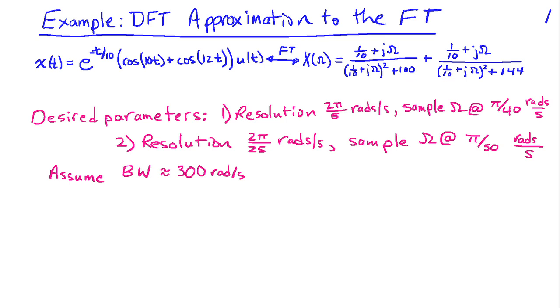Here's the scenarios we're going to consider as far as our desired parameters. In one case, the resolution of our DFT approximation will be 2π/5 radians per second. We want to be able to see details at that level, and if you look at the original signal, the two frequencies are spaced by 2 radians per second, so 2π/5 is just a little bit more than 1 radian per second, so we should be able to resolve the peaks associated with these two sinusoids at this level of resolution, and we're going to sample omega in frequency at π/40 radians per second. The second case has higher resolution by a factor of 5. We're going to decrease the resolution to 2π/25, so the main lobe width of our window function will be well below the separation of these two sinusoids. We should be able to see them, and we'll sample a little more densely in frequency at π/50 radians per second.